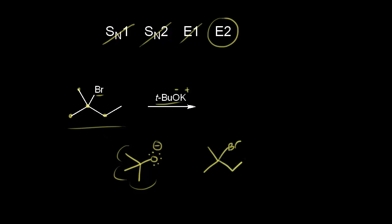For the E2 mechanism, the carbon bonded to the halogen is the alpha carbon, and the carbons bonded to it are the beta carbons — there are three beta carbons here. Our sterically hindered strong base comes along and takes a proton from one beta carbon; those electrons move into the bond, and at the same time the electrons come off onto the bromine to form the bromide ion, giving us one product — a double bond.